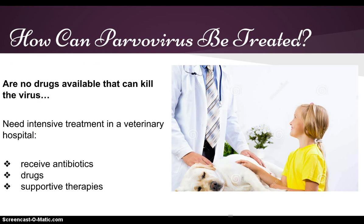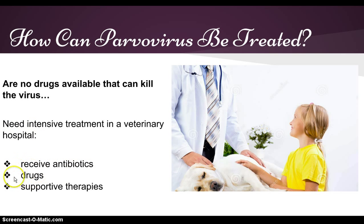How can parvovirus be treated? There are no drugs available that can kill the virus yet. Treatment is generally straightforward and consists of aggressive supportive care to control the symptoms and boost your dog's immune system to help him fight this dangerous disease. Your dog will need intensive treatment in a veterinary hospital, for example antibiotics, drugs to control vomiting, intravenous fluids, and other supportive therapies. Be prepared, as this treatment can be expensive. The average hospital stay is about 5 to 7 days. Please note that treatment is not always successful, so it is important to make sure your dog is vaccinated.